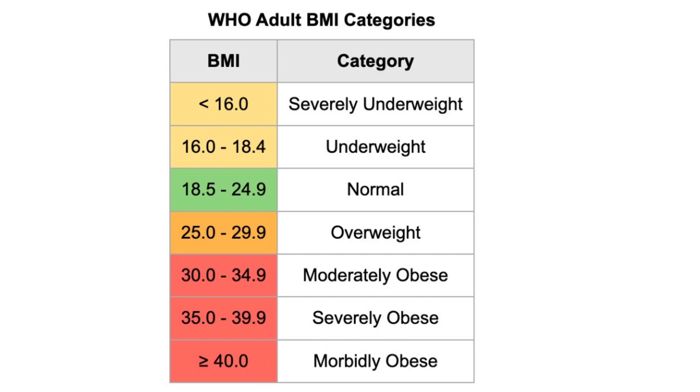If the ratio is 30 to 34.9, the person is moderately obese. And if the ratio is 35 to 39.9, it is severely obese. And if it is greater than 40, the person is morbidly obese.